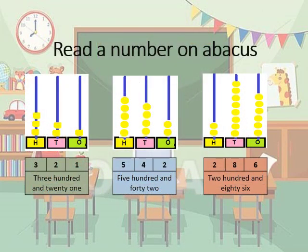Some questions I have solved for you. In the first one, count the beads in the 100s place: 1, 2, 3 — write 3. In the 10s place, count the beads: 1, 2 — write 2. And in the 1s place: 1 — write 1. The number we have got is 321.